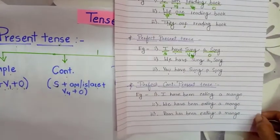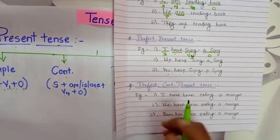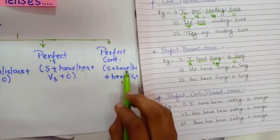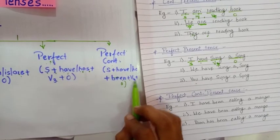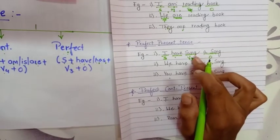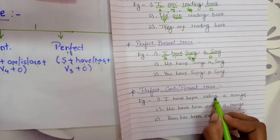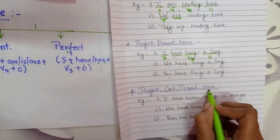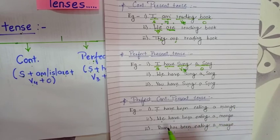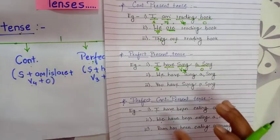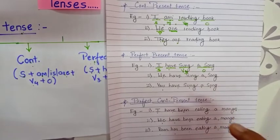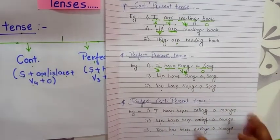Now let's move to perfect continuous present tense. The formula is S plus have/has plus been plus V4 plus object. For example: if the sentence is I have eaten a mango, that is perfect present tense. But if the sentence has been plus V4, then it is perfect continuous present tense. Examples: We have been eating a mango. Ram has been eating a mango. Today we have studied all different forms of present tense — simple, continuous, perfect, and perfect continuous — with examples.